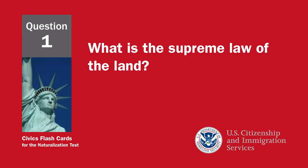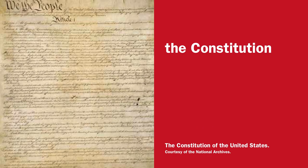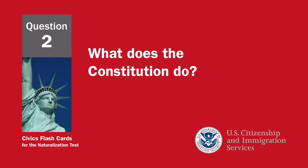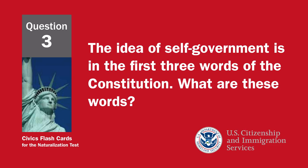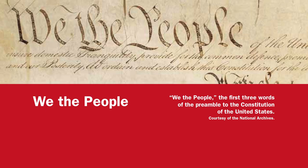What is the supreme law of the land? The Constitution. What does the Constitution do? It sets up the government, defines the government, and protects basic rights of Americans. The idea of self-government is in the first three words of the Constitution. What are these words? We the people.